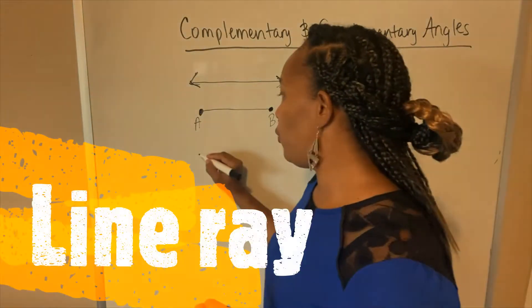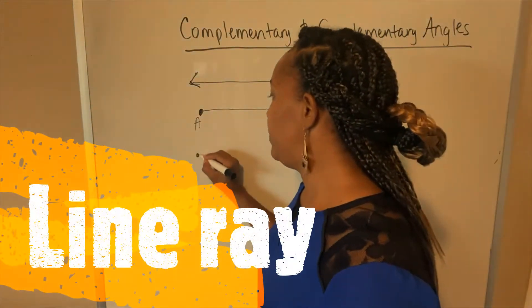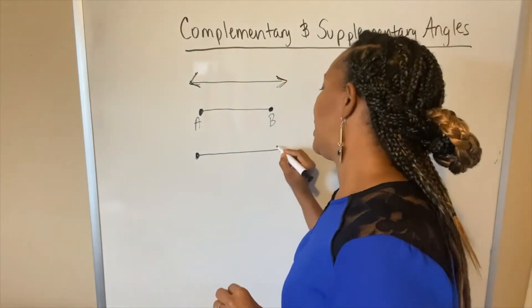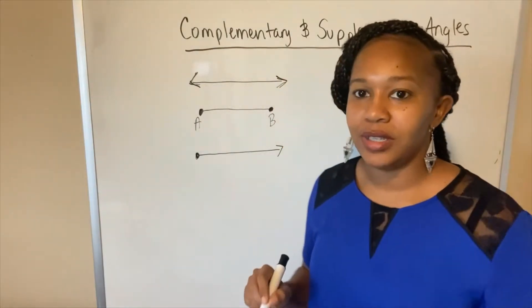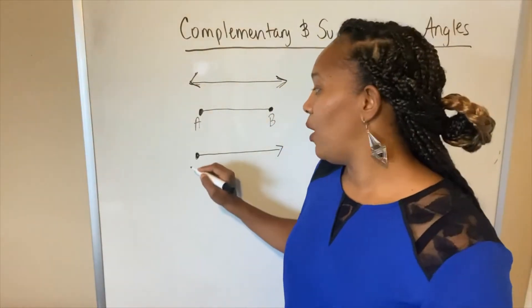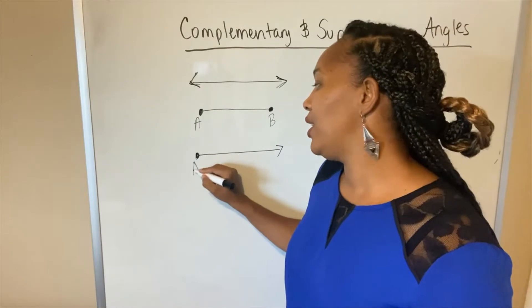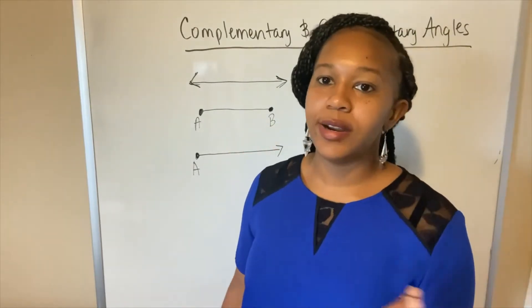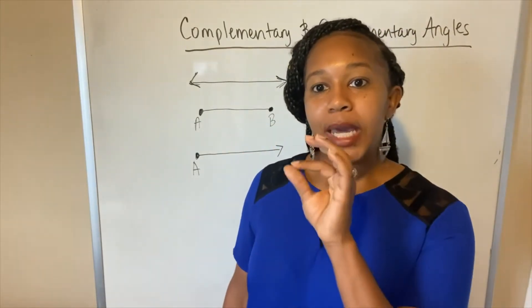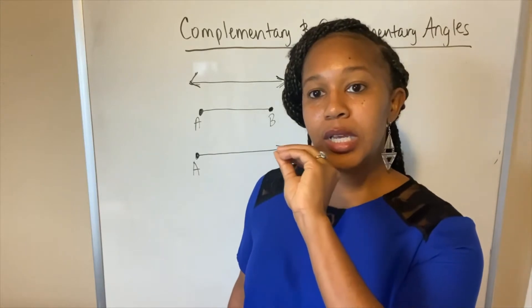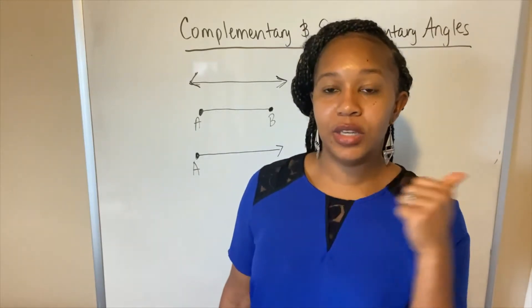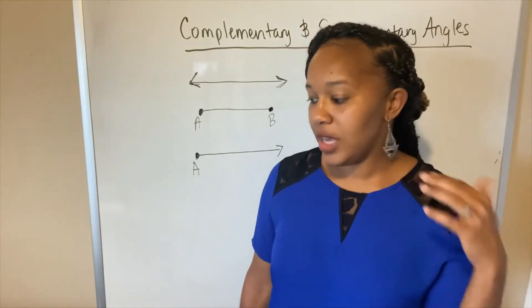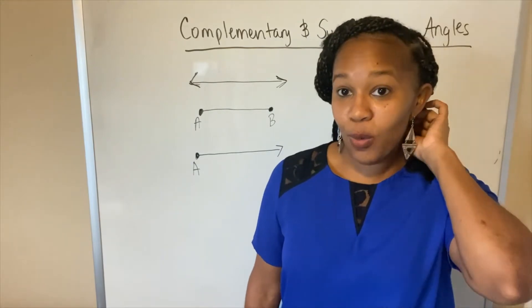Then we have what's called a line ray. The line ray continues on in one direction. It has one point and then it continues on. We use A, or any letter, to define that point. It cuts off on one end but continues on the other end. That is what we call a line ray.